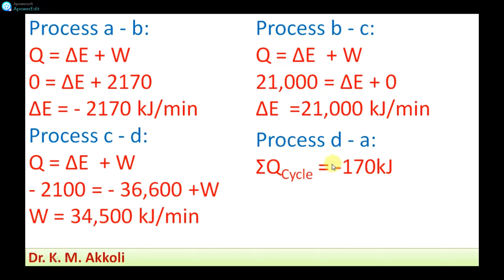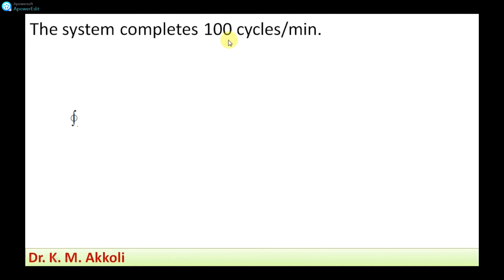For process D-A, all three values — heat transfer, work transfer, and change in internal energy — need to be found. At the completion of the cycle, the summation of all heat transfers is minus 170 kilojoules per cycle as given. We will now apply calculations to find the remaining values.